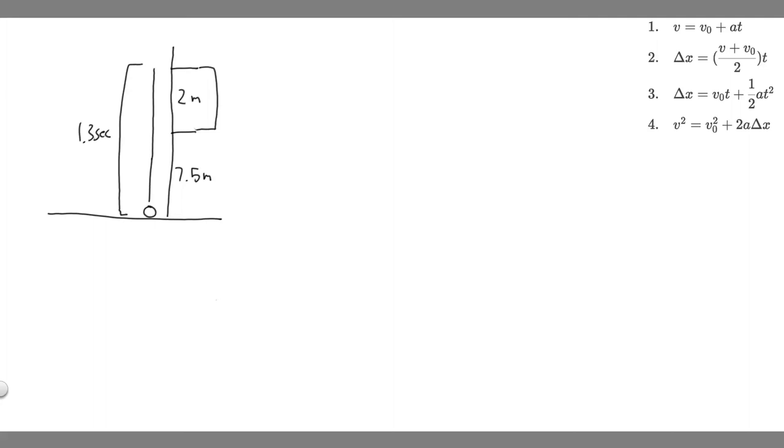In this problem, we're told a ball is thrown straight up. It passes a 2-meter-high window 7.5 meters off the ground on its path up and takes 1.3 seconds to go past the window. What was the ball's initial velocity?